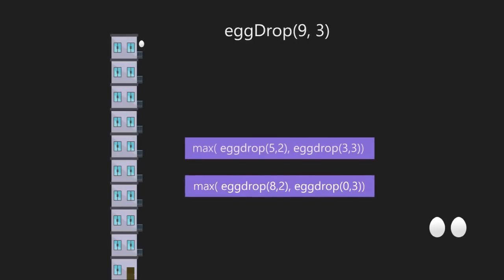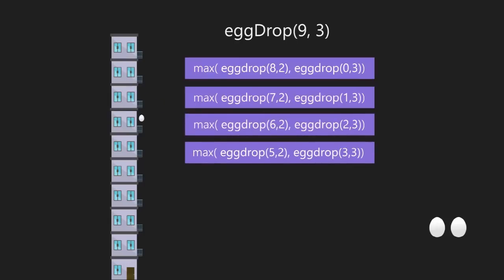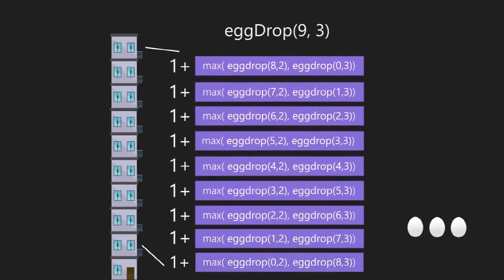Coming back to the original problem: for the top floor (ninth floor), since there are eight floors remaining below, the parameters for the first function are egg_drop(8, 2), and since there are no floors above, the second function is egg_drop(0, 3). In a similar manner we consider each floor and write their corresponding functions. Since dropping an egg from a floor counts as one attempt, we add one to each expression.